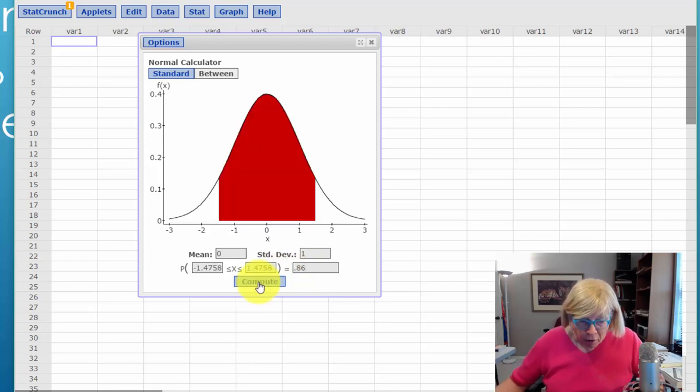So we click on compute, and as Brandon said, we know it's symmetrical. So the 86 percent of the area under the standard normal curve lies between negative 1.476 z and positive 1.476 z. And as he said, that is the seven percent.